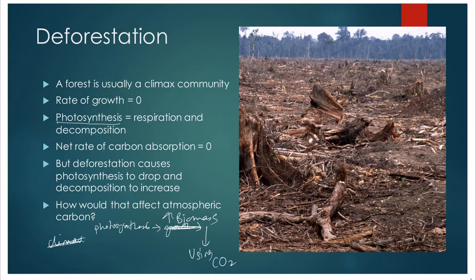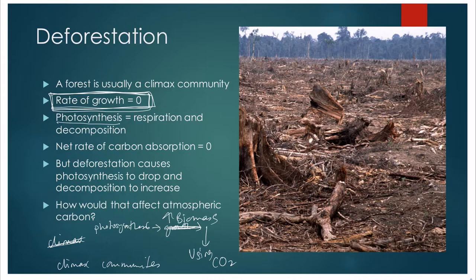However, in a climax community there is no overall growth. That ecosystem has reached an equilibrium where, as much as there are new trees growing, there are probably other trees dying and decomposing. So the CO2 being incorporated in the process of growth is probably equivalent to the amount of CO2 going back out because of decomposition and the death of old trees. In a climax community such as a forest, that forest is not resulting in an overall removal of CO2 from the atmosphere.